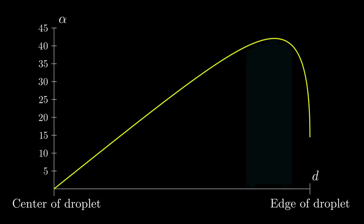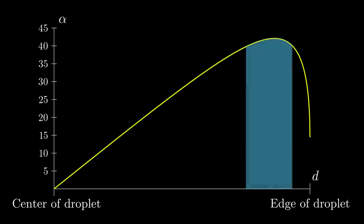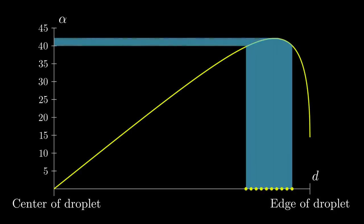The reason rainbows look the way they do is that this graph reaches a maximum value and then goes down again. Whenever a smooth graph has such a maximum, a large portion of the input values will have output values very close to the maximum.